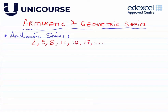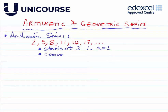You keep adding three all the time, so you'd expect 20 to come after 17. This arithmetic series starts at two, so we say a equals two — a is our starting number. The common difference is the value we add to one term to get the next. In this case, we chose d equals three.